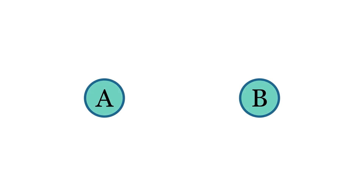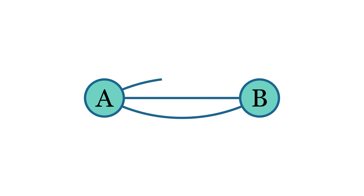There are other types of graphs, like parallel graphs, where multiple edges can exist between two nodes, or graphs with self-loops, where an edge is directed back to the same node. However, we won't be covering those in this video.